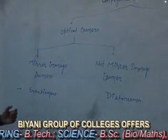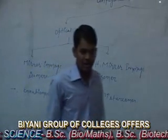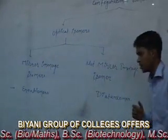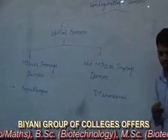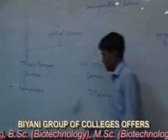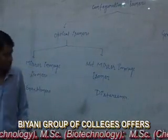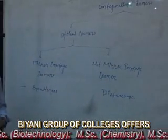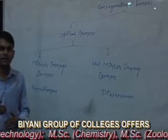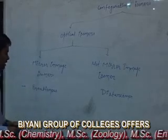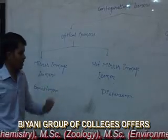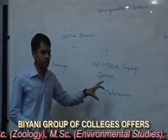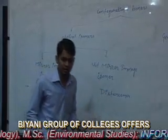Mirror image isomers are also called enantiomers, and non-mirror image isomers are called diastereomers. The enantiomers are stereoisomers which are non-superimposable on their mirror image, and diastereomers are also not superimposable on their mirror image.